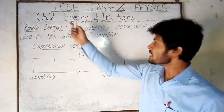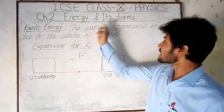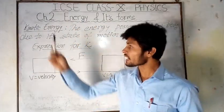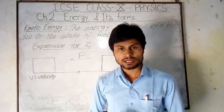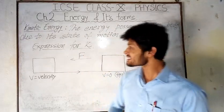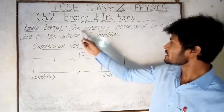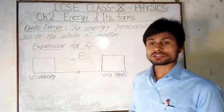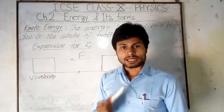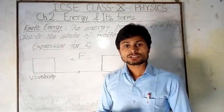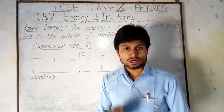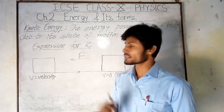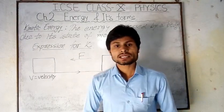Good morning everyone. Here we are going to talk about energy and its forms. In this class we will know about kinetic energy — that is the energy possessed by a moving object. This is the definition: the energy possessed by an object due to its state of motion. That means the energy which is caused because of the motion of the object is kinetic energy.